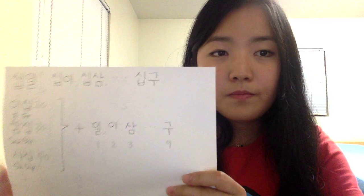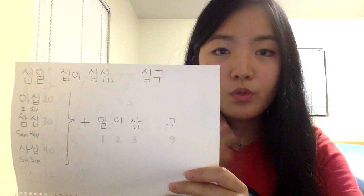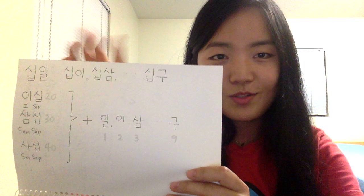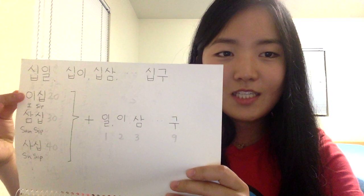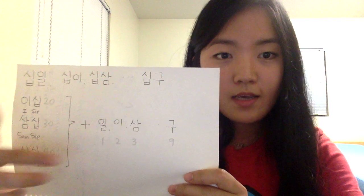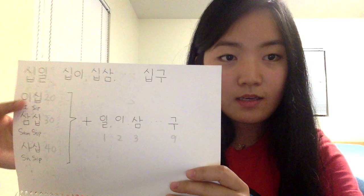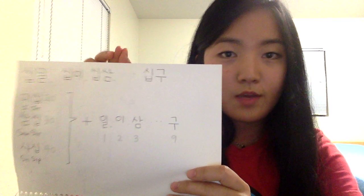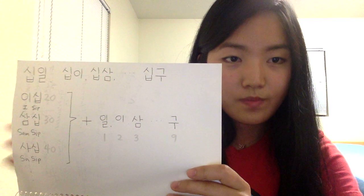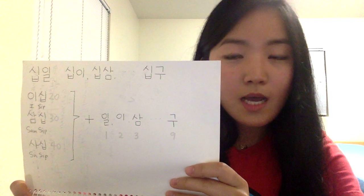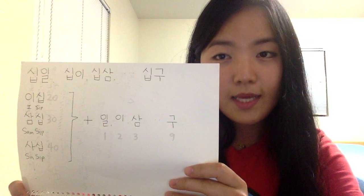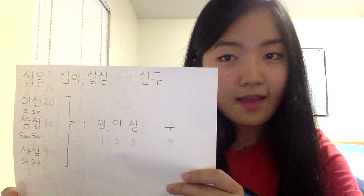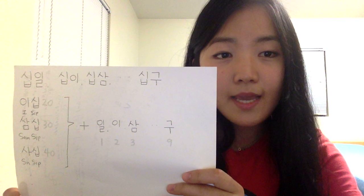And when you want to say 21, just put 21 together — 20 and 1 put together — and 21 means 21. And 22 is 22, 23 is 23, 24 is 24, 25, 26, 27, 28, 29. Which is 29. And then the next number is 30.